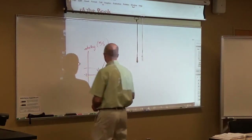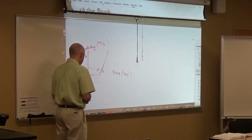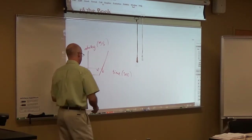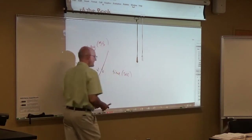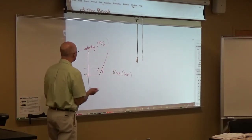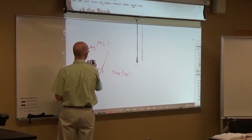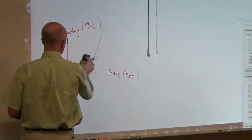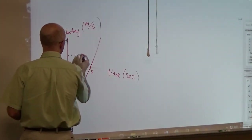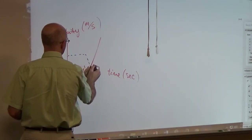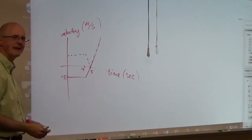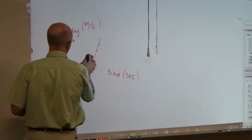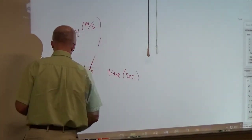That is the velocity. The speed is the absolute value of the velocity — you could draw a speed graph on here as well. The speed is the absolute value of the velocity, which would look about like that. That would be the absolute value of the velocity graph. I'm focused on velocity — that's the direction.